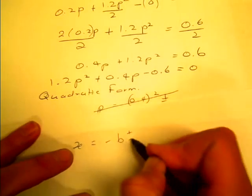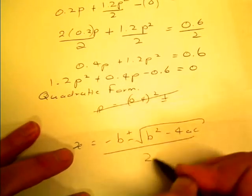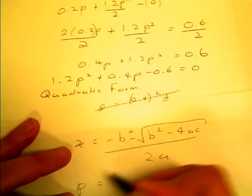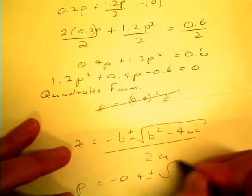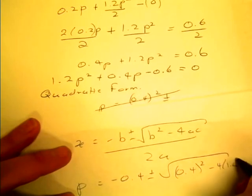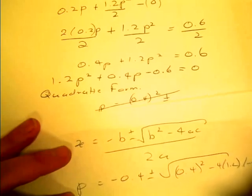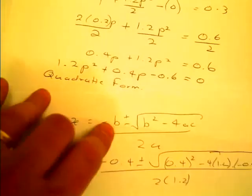I'm going to use this one. But we want p, b is 0.4, so minus 0.4 plus or minus 0.4 squared take 4 times 1.2 times negative 0.6 over 2 times 1.2.